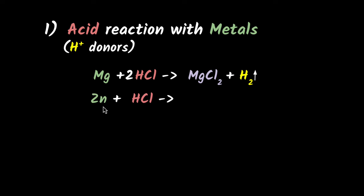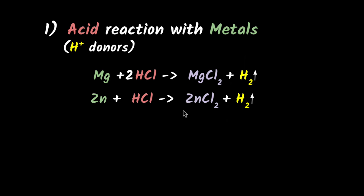Let's try one more. What happens if you have zinc reacting with hydrochloric acid? Pause the video and see what you will get. Again, hydrochloric acid will donate its H+ ions, and therefore zinc will react with chlorine to get zinc chloride, and you'll have H₂ gas liberated. Just like before, you have to balance this equation.